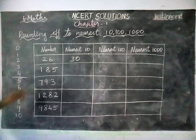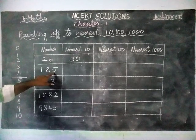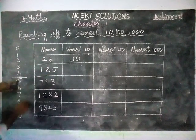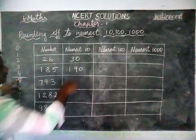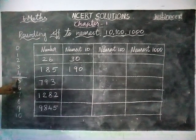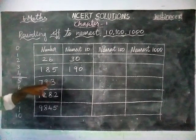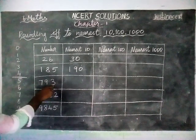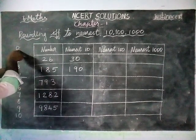Now verify for 185 to nearest 10. The ones digit is 5. Since 5 falls in the 5–9 range, we choose the next 10, which is 190. Next, for the number 793, the ones place is 3. Since 3 falls in the 1–4 range, we choose the previous 0, so the answer is 790.